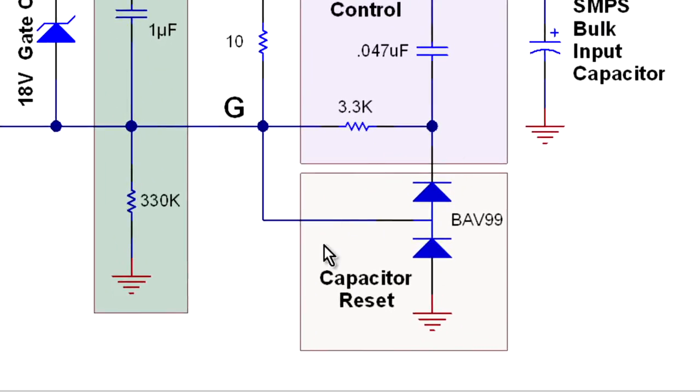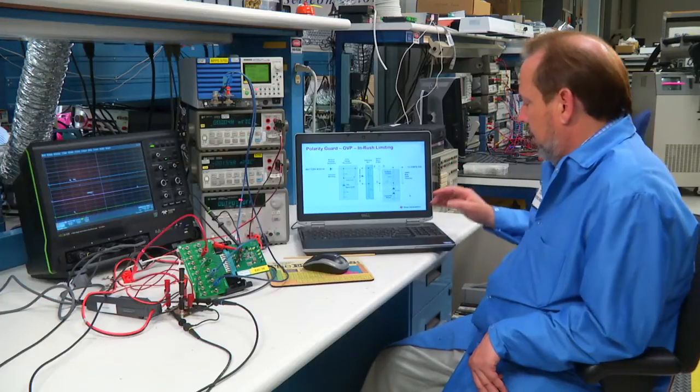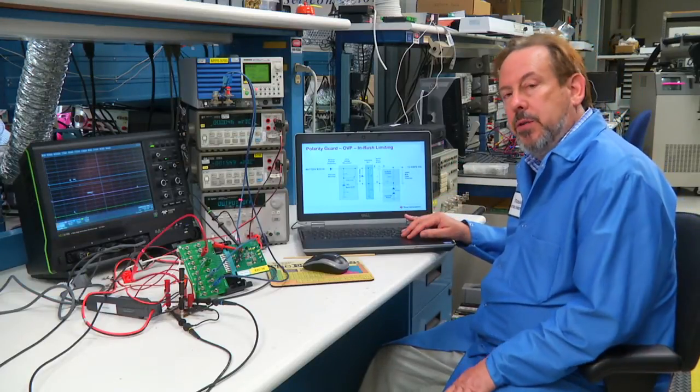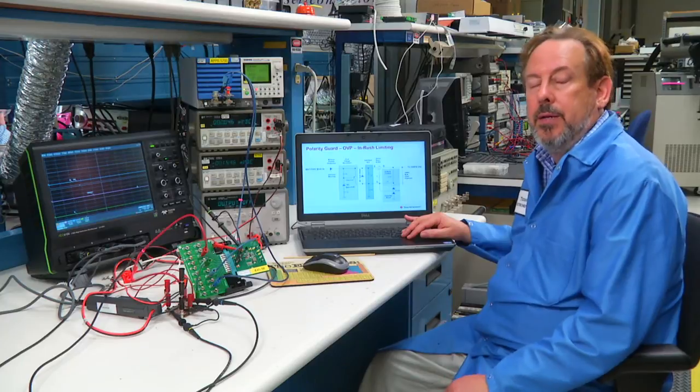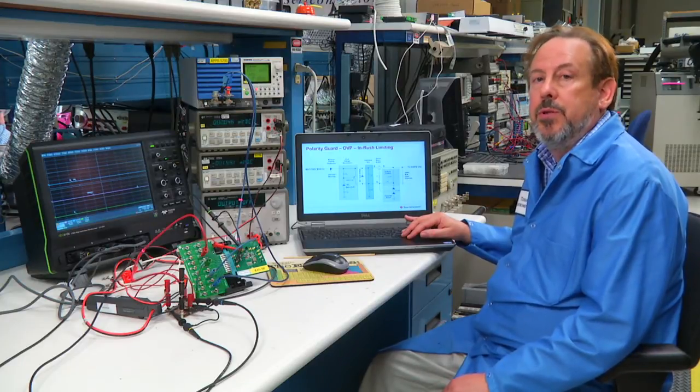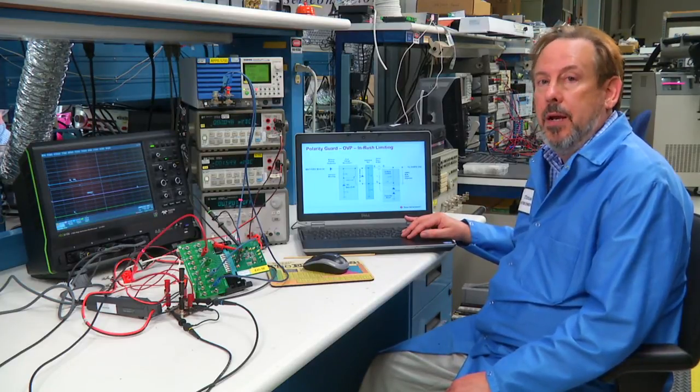Likewise, there's another block, which is a capacitor reset function, so that when power is disconnected, both these RC time constants are reset back to zero. Now, there's also an additional circuit we would like to recommend, and that is an enable supervisor, which we'll discuss in the next slide.